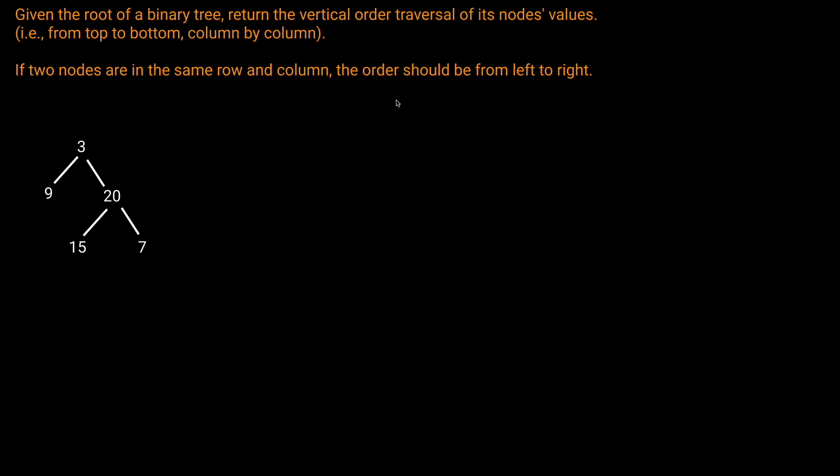Welcome back to the Cracking FAANG YouTube channel. Today we're going to be solving LeetCode problem 314, Binary Tree Vertical Order Traversal. Let's read the question prompt: given the root of a binary tree, return the vertical order traversal of its node values, i.e., from top to bottom, column by column. If two nodes are in the same row and column, the order should be from left to right.